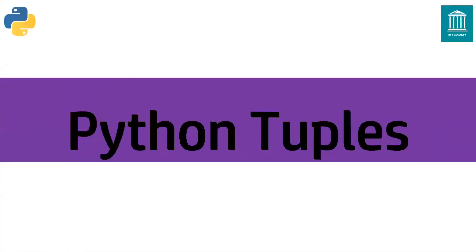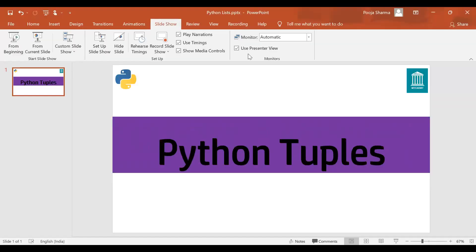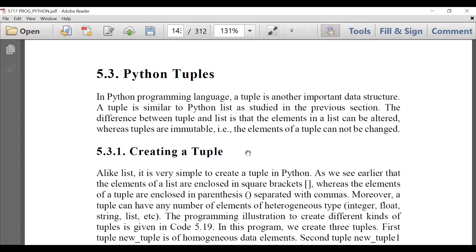Today we are going to start a new topic called Python tuples. We have already studied numbers and lists in the previous lectures. Tuples are almost similar to lists. In lists we declare elements in square brackets and they work like an array. Tuples are almost the same — they also contain heterogeneous kinds of data, but the elements in a tuple are immutable, meaning they are uneditable. We cannot change the elements of a tuple.